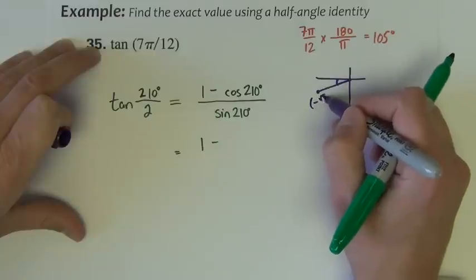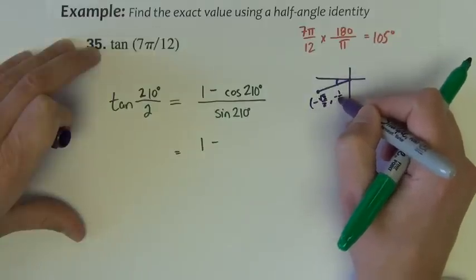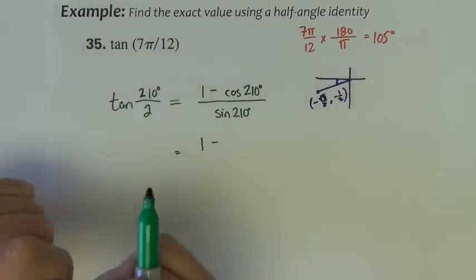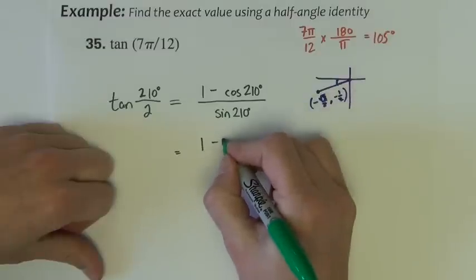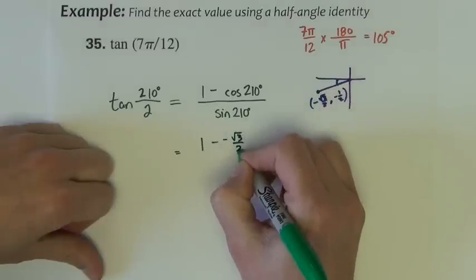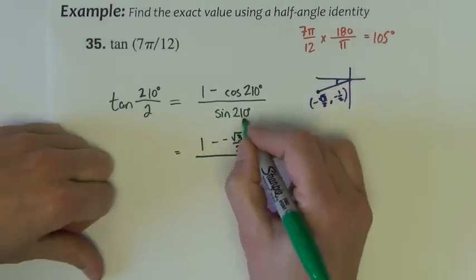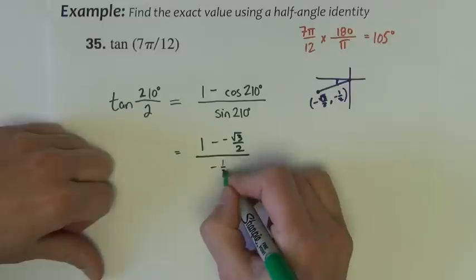The point is negative square root of 3 over 2, negative half. So the cosine of 210 is negative square root of 3 over 2, sine of 210 is negative half.